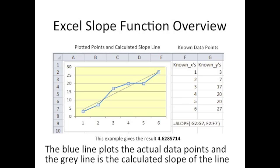Cell F9 shows the slope function syntax that yields a slope of 4.63. The gray line on the graph illustrates the calculated slope of the line. This slope line shows that the line moves 4.63 units vertically for every unit it moves horizontally.